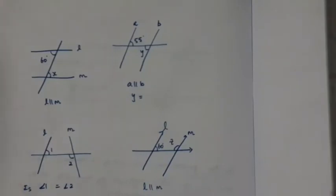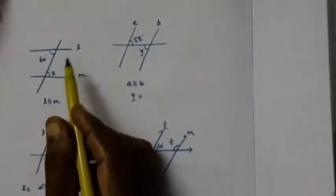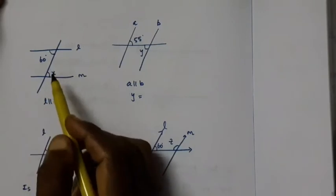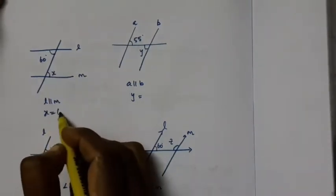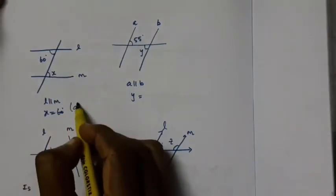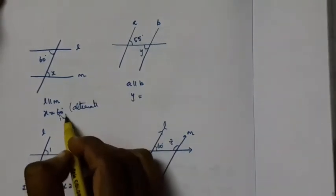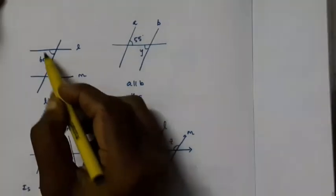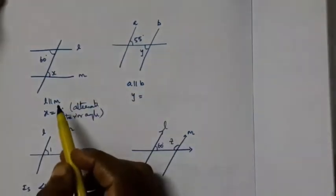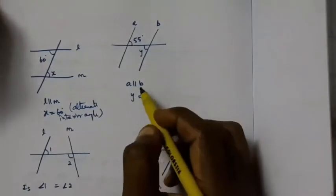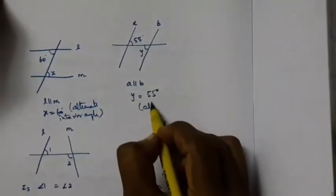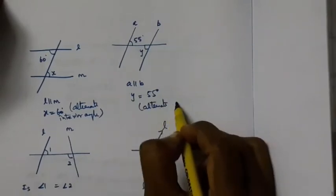Now we use these properties. Here L is parallel to M, so what is the value of X? X is 60, because these two are alternate interior angles — if L is parallel, they must be equal. Here Y is 55, for the same reason — alternate interior angles.